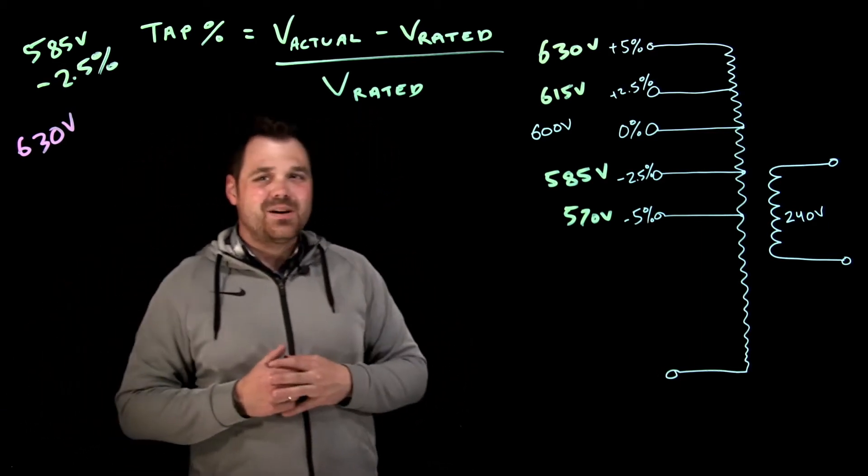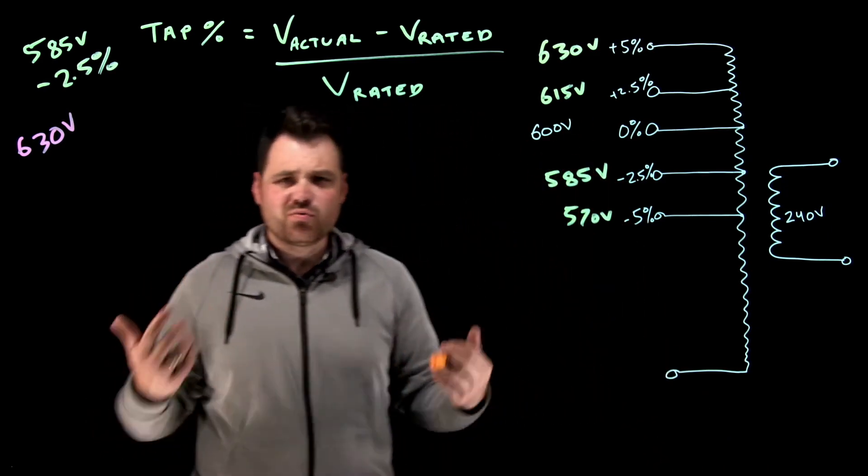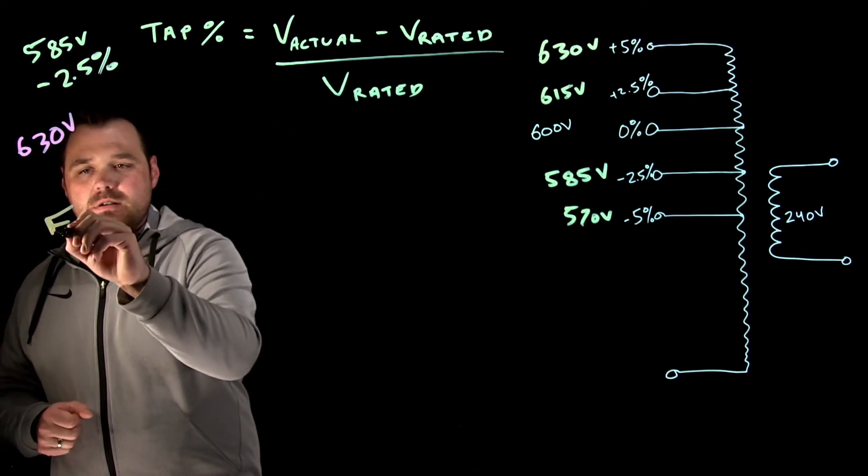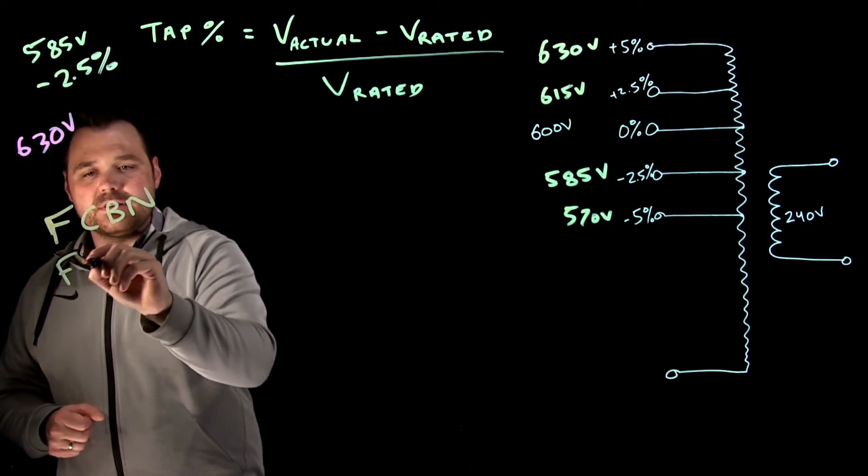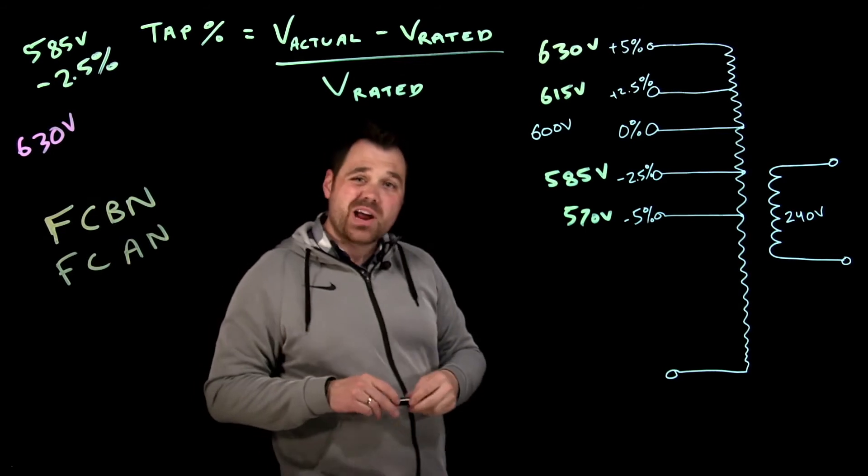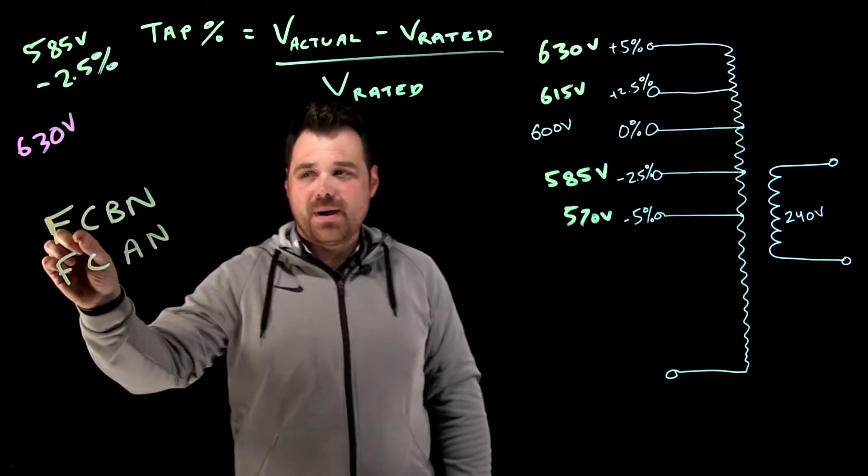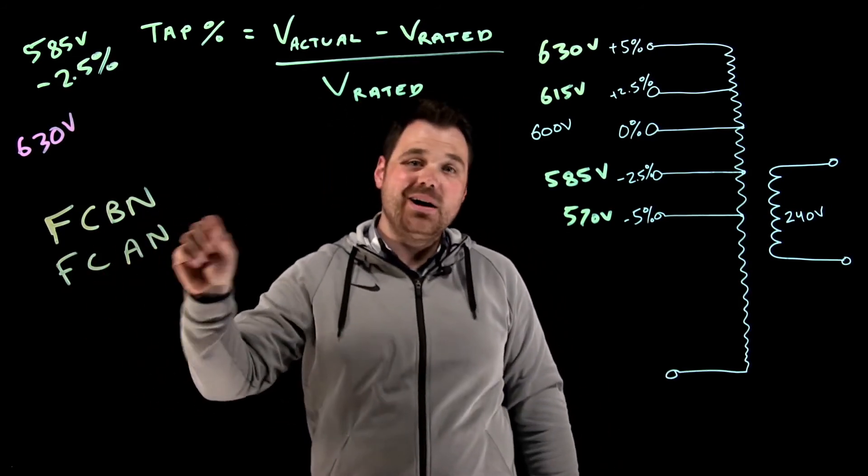But the last thing I want to talk about is a rating of these taps. So on these taps, there's actually going to be a rating. You'll see things you might see FCBN or FCAN. So those ratings will be right on the taps. Now what that stands for is full capacity below normal or full capacity above normal.